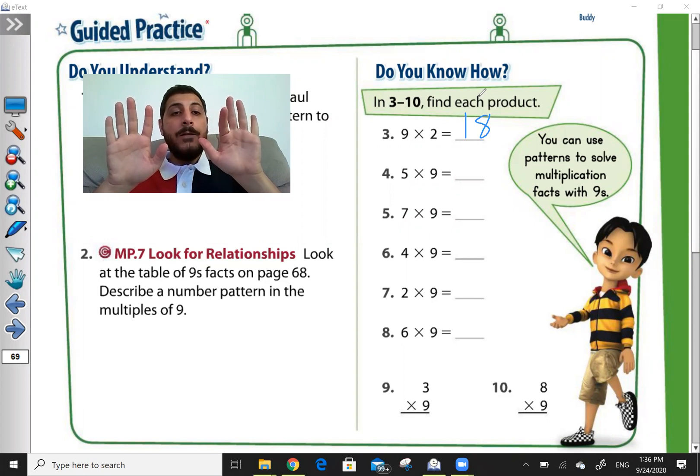How much before this finger do I have? 4. How much after it, how many fingers do I have? 5. So 45.